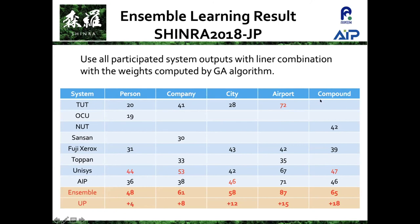Regarding the ensemble results: for compound, the best single system scored 47, and the ensemble of four systems scored 65 — an improvement of 18 points — showing that simply applying deep learning cannot match the collective effort.